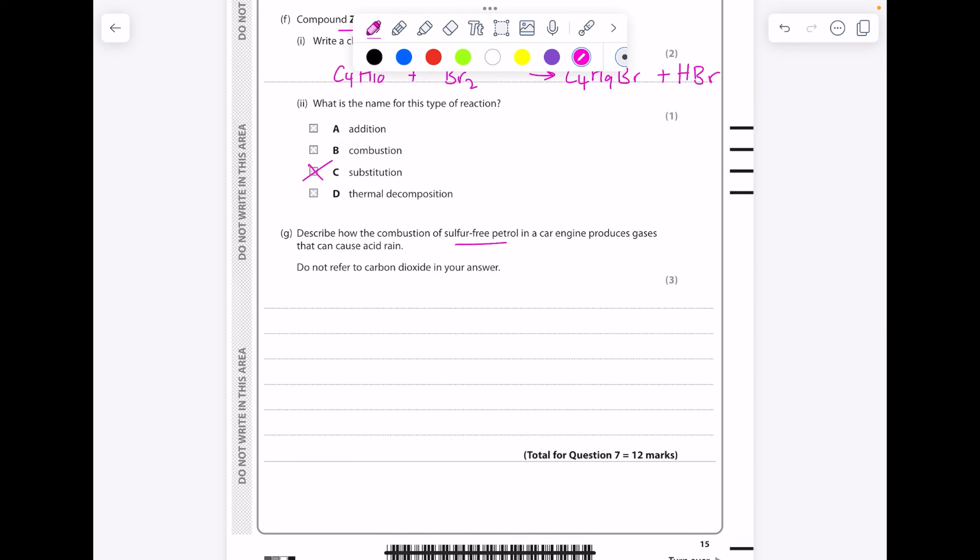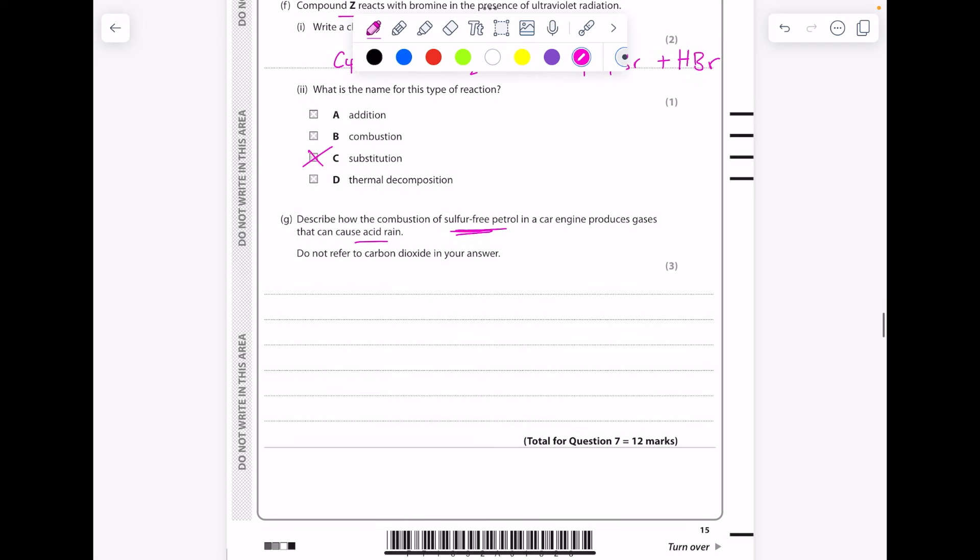Describe how the combustion of a sulfur-free petrol in a car engine produces gases that can cause acid rain. Do not refer to carbon dioxide in your answer. Okay, so they want the method of producing acid rain which isn't the sulfur and crude oil method because they've told us it's sulfur-free. So high temperatures in car engines cause nitrogen and oxygen, which remember are just present in the air, to produce nitrogen oxides, which dissolve in water forming acid rain.